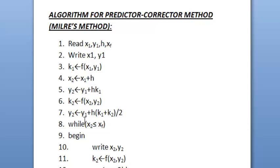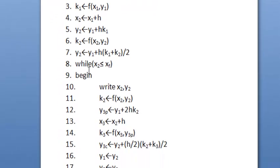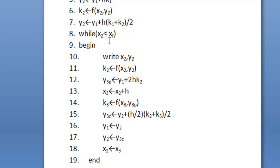Then we assign the value of function at point x2 comma y2 in k2. And then again we find the value of y2 using y1 plus h times k1 plus k2 divided by 2. Here we test for the condition using a loop while x2 is less than or equals to xf which is our x final.